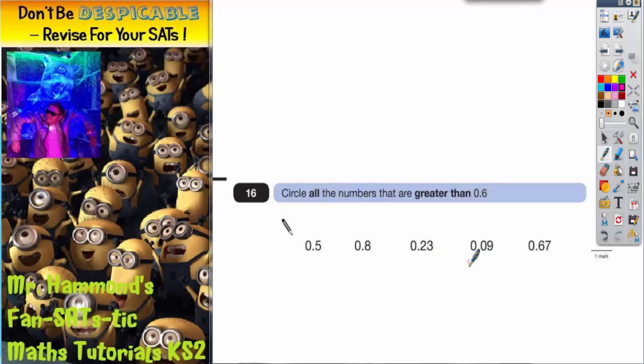Now, to make it easy to compare, let's make them all have the same number of digits after the point. So we're going to make them all have two digits after the point.